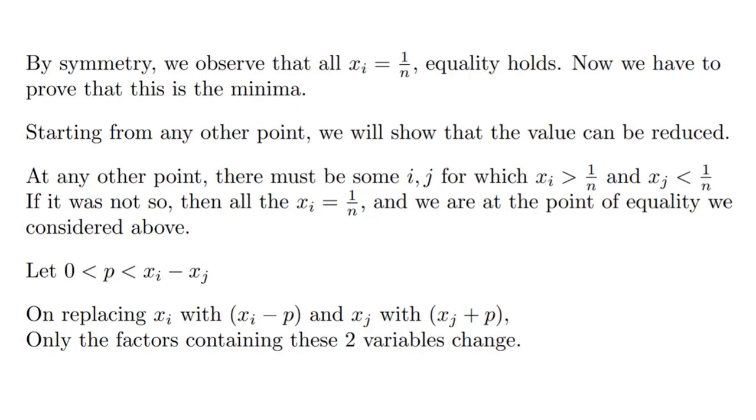For any other point, taking those x_i and x_j, we take a small positive value p such that p is greater than zero but less than x_i minus x_j, which is a positive value. On replacing x_i with (x_i - p) and x_j with (x_j + p), only the factors containing these two variables will change.